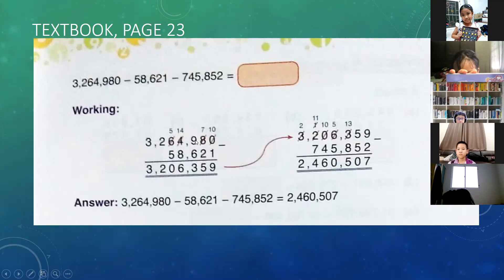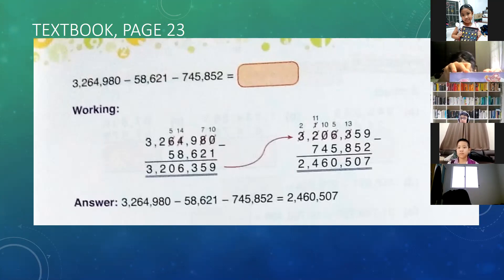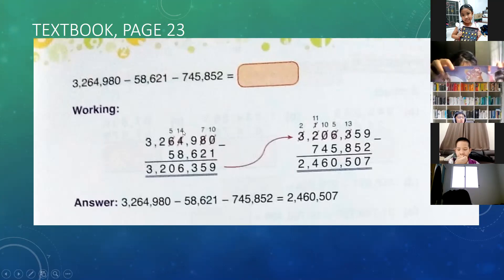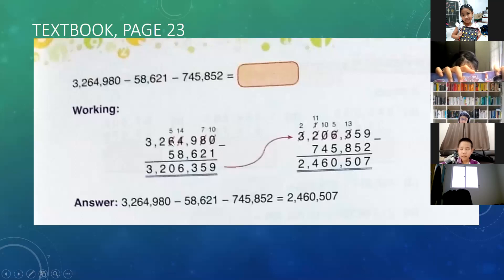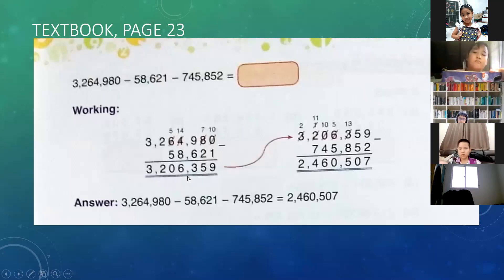We didn't borrow, so 6 stays as 5 after borrowing — 5 minus 5 equals 0. 2 minus 0 equals 2. 3 minus 0 equals 3. Write this number here as the initial difference. Then for the next subtraction: 9 minus 2 equals 7. 5 minus 5 equals 0. 3 becomes 13 — we borrow 1 from 6, so 6 becomes 5. 13 minus 8 equals 5.